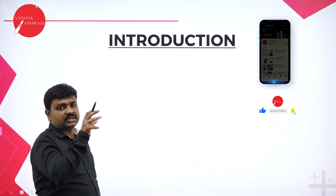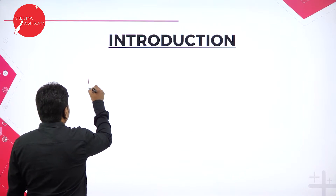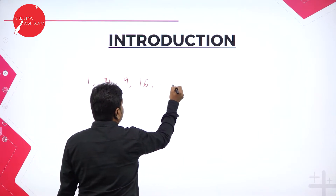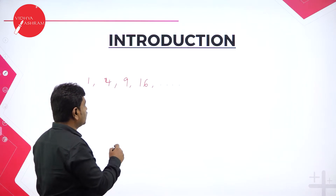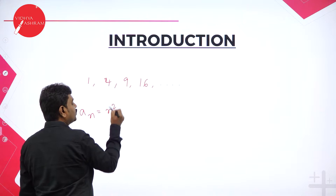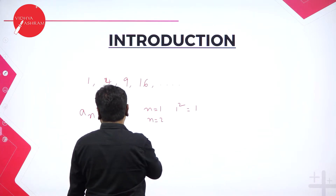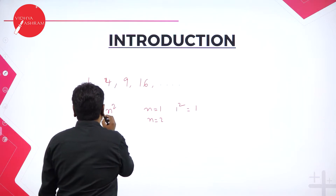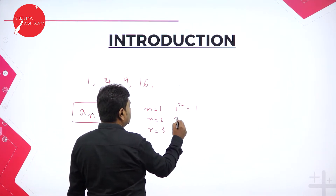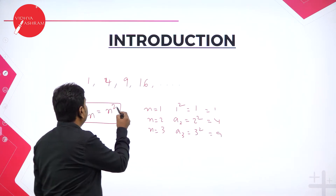A sequence or series refers to numbers arranged according to some rule. For example, 1, 4, 9, 16 — these numbers are in the form n². The general formula is a_n = n². If you put n = 1 you get 1², which is 1; n = 2 gives a₂ = 2² = 4; n = 3 gives 9; n = 4 gives 16. Every term follows a rule.